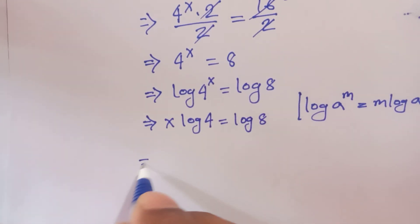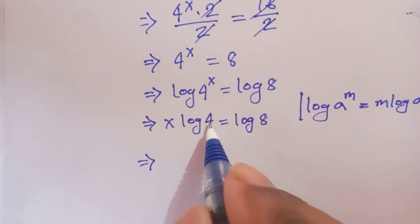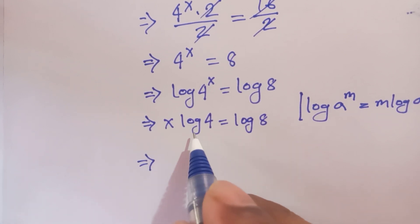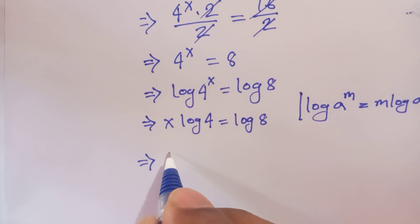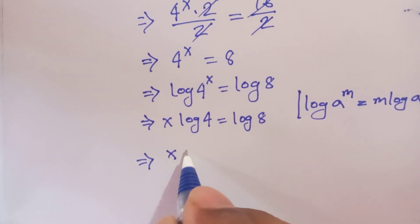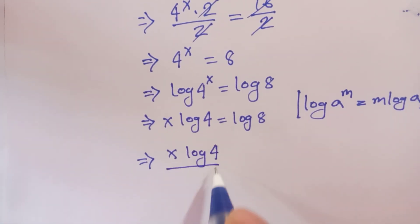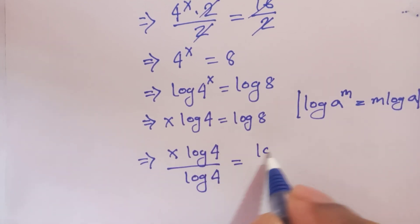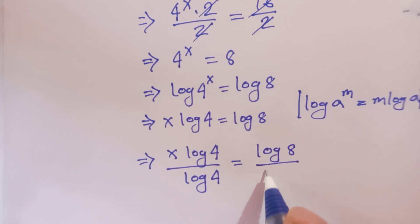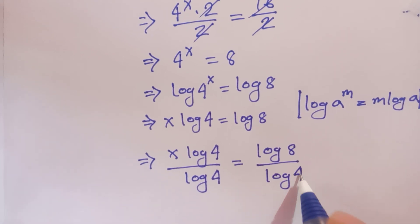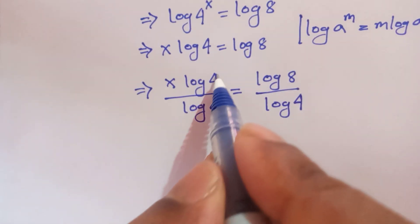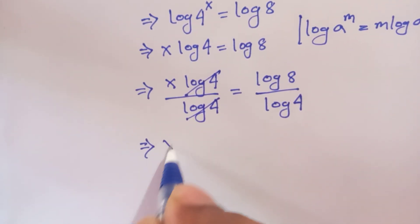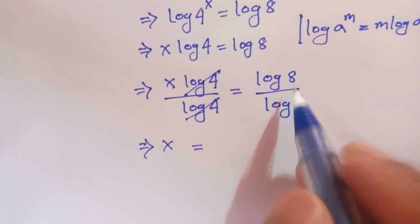At this point we need the value of x, so we divide both sides by log of 4. That means 4x times log of 4 divided by log of 4 is equal to log of 8 divided by log of 4. The log of 4 cancels out, giving x is equal to log of 8 divided by log of 4.